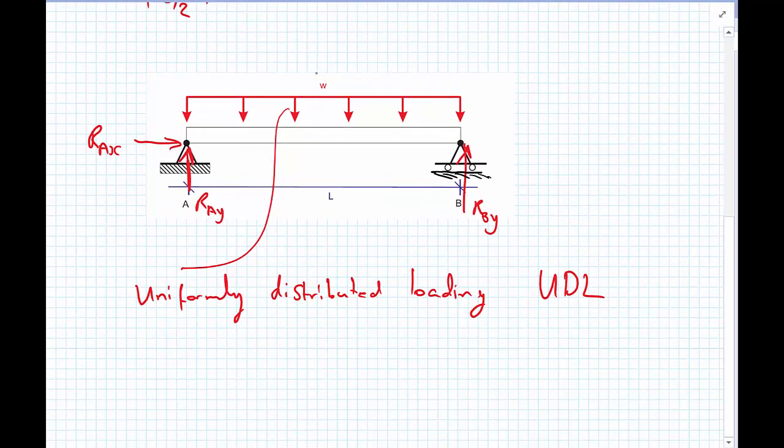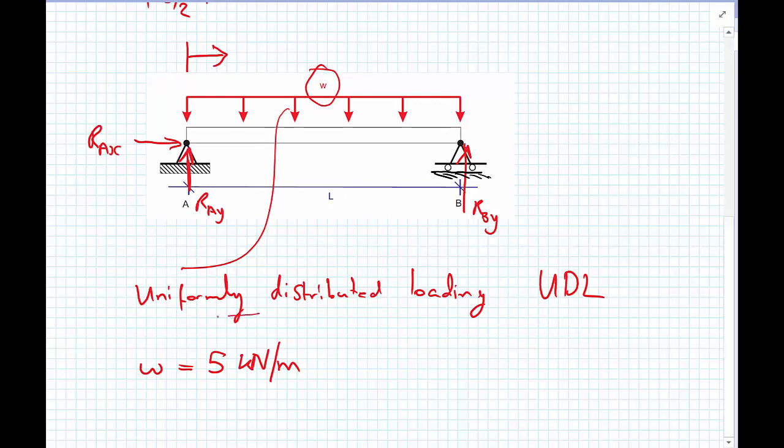And so, here we've called it W, but little w, and for the example we're going to do, is going to be 5 kilonewtons per meter. And by per meter, we mean per meter as we move along the beam. And we call it uniformly distributed, because it's a constant amplitude all the way along.